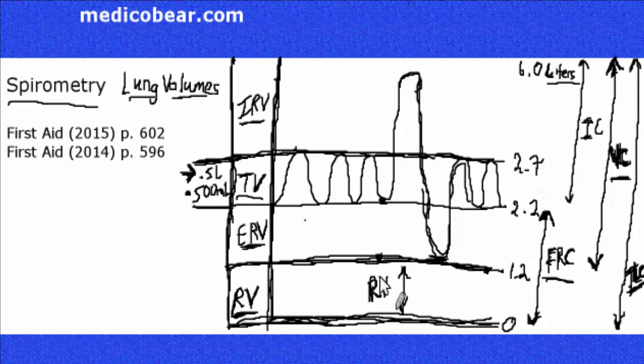A good question that they'll ask is, which of these cannot be measured by spirometry? And the answer is residual volume. Now if they give you the TLC and the VC or something where you can deduce the RV, then you can calculate that. But a very common question I've seen before is, what cannot be measured on spirometry? The answer is residual volume.